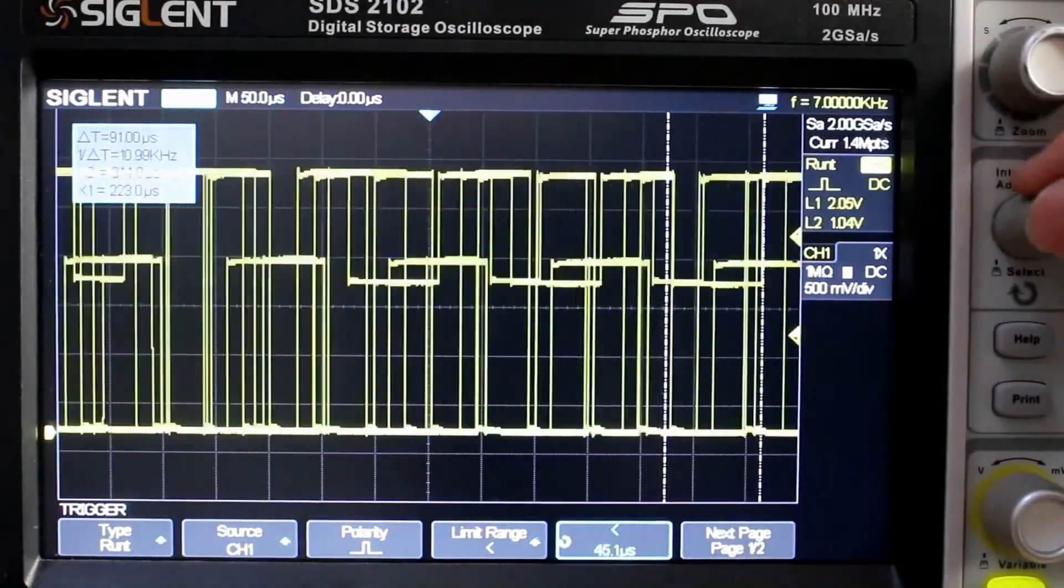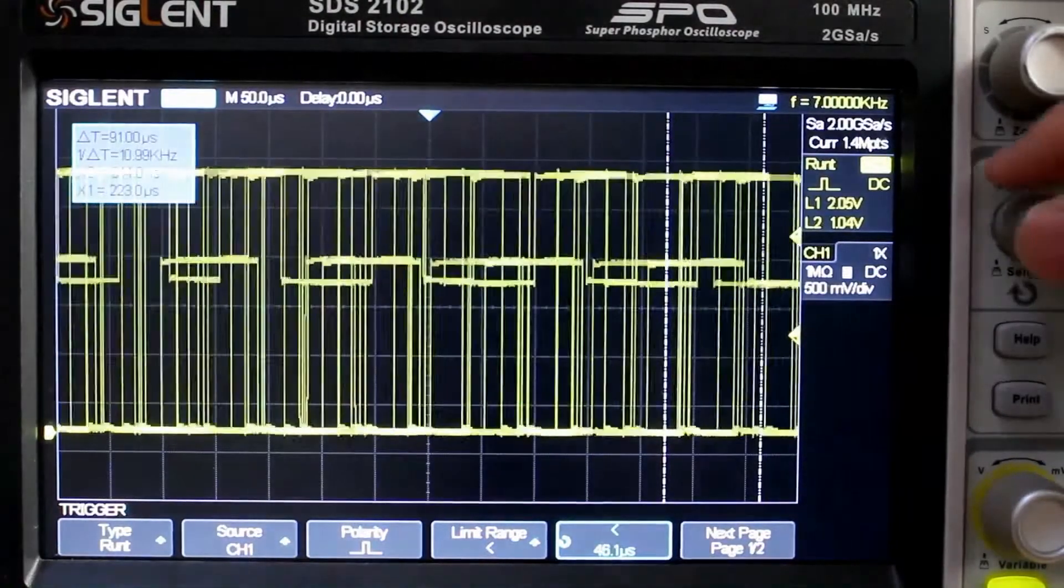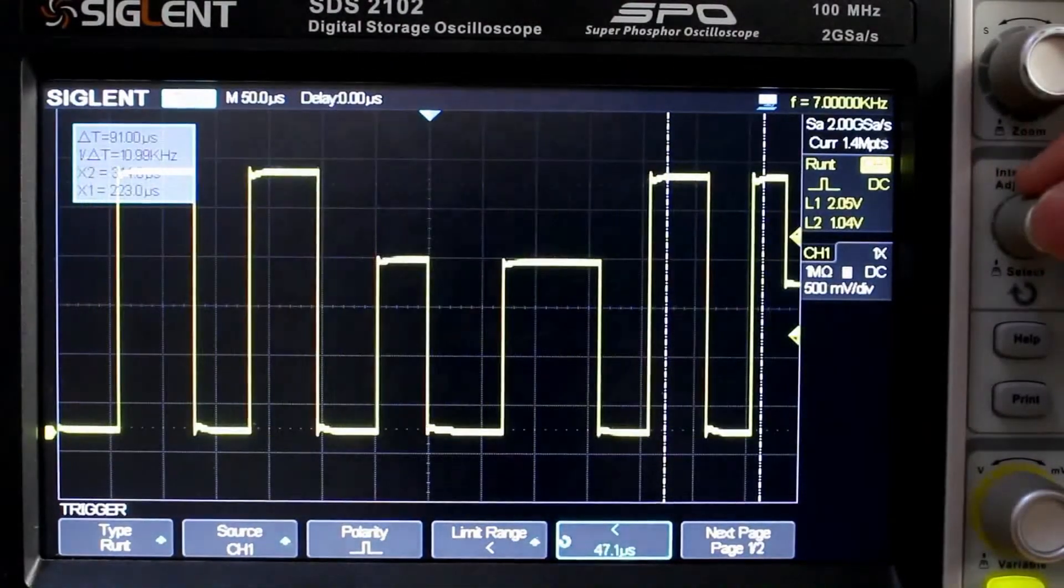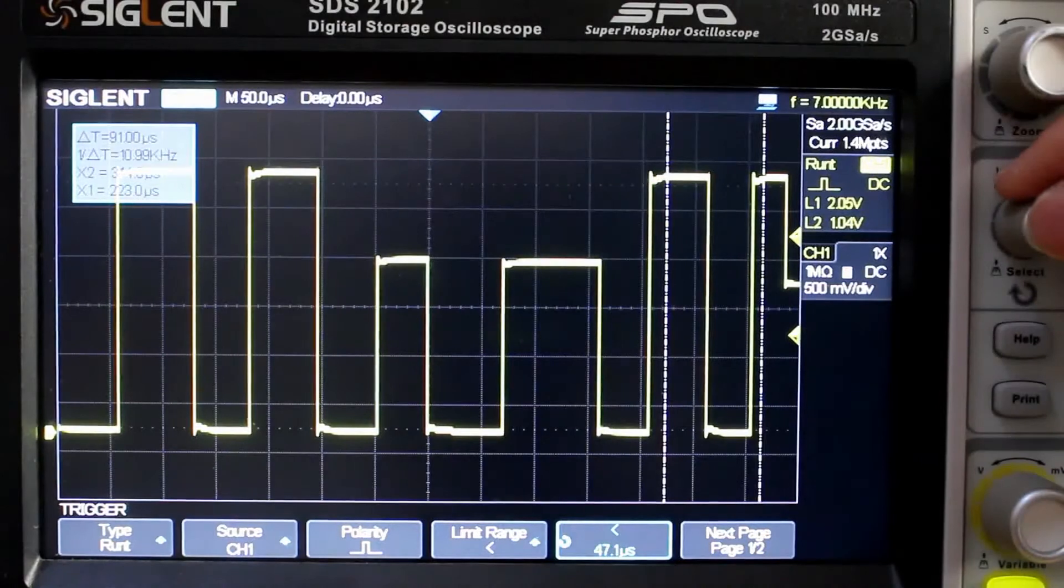And since we have it set to less than our limit range, it'll trigger on the shorter pulse. And there we have it.